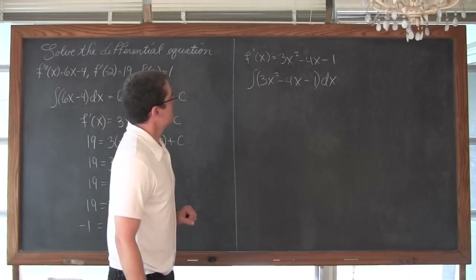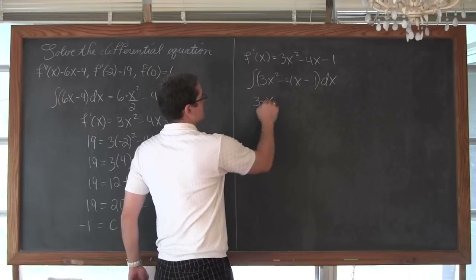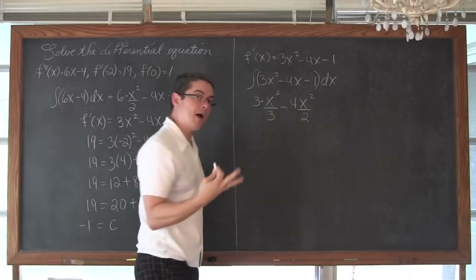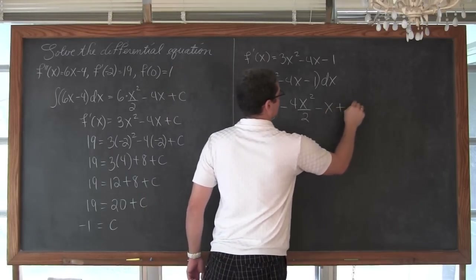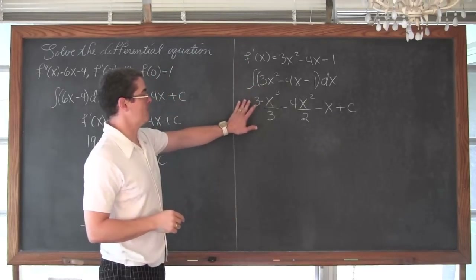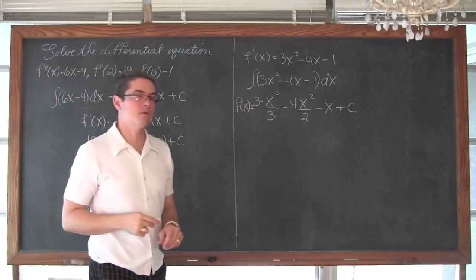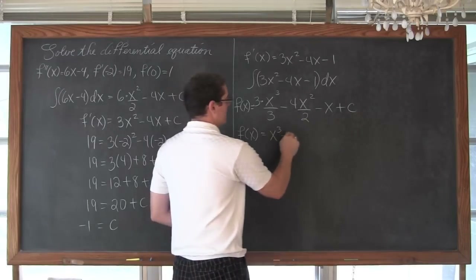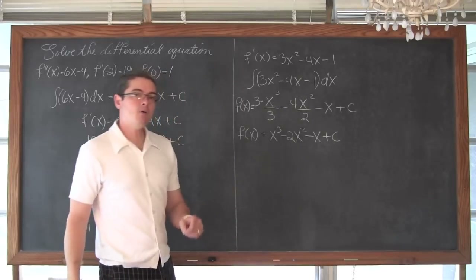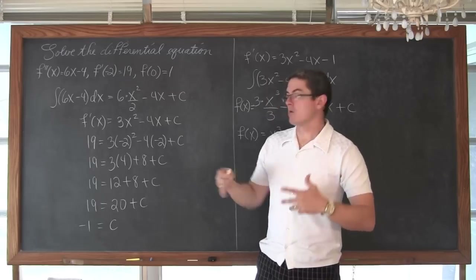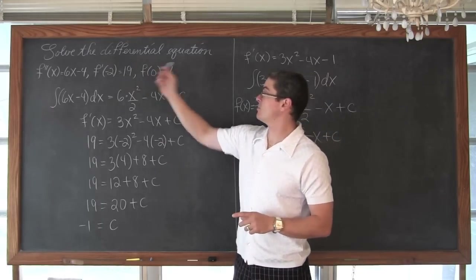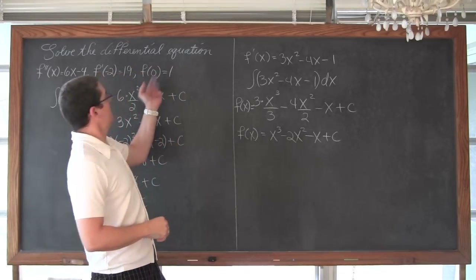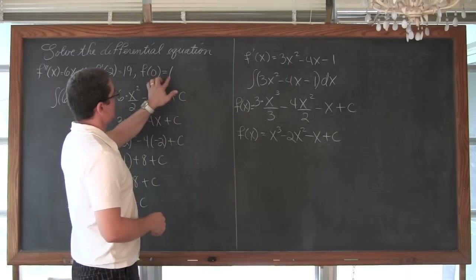We are going to have 3 times x — raise that power by 1 and divide by the same value — minus 4, raise that exponent by 1 and divide by the same value — just using that power rule with each of the individual terms — minus x plus C. This is the first derivative; we just did the antiderivative, which now means this is going to be our general solution for the original function. So f of x is equal to — 3 divided by 3 is 1 — so x cubed, 4 divided by 2 is 2, so minus 2x squared minus x plus C. Now we use the initial condition — that extra piece of information about the original function — and that says when you plug in an x value of 0 you get a y value of 1.